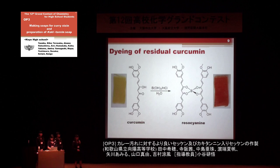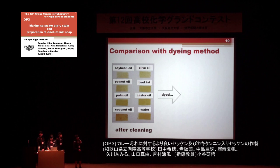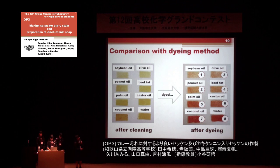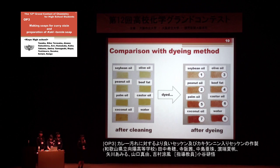By using this dyeing method, we evaluated the cleaning power of the seven kinds of soap. As a result, the soap made from soybean oil was most suitable for curcumin stain. The second was peanut oil and the third was olive oil. On the other hand, soap from palm, castor, and coconut oil were not suitable for curry stain.